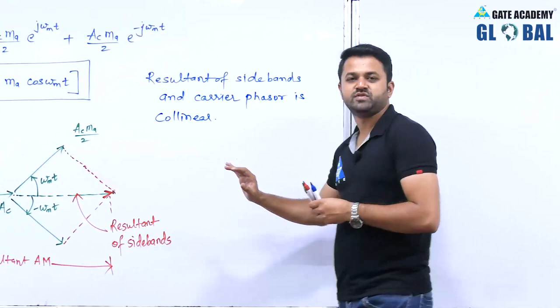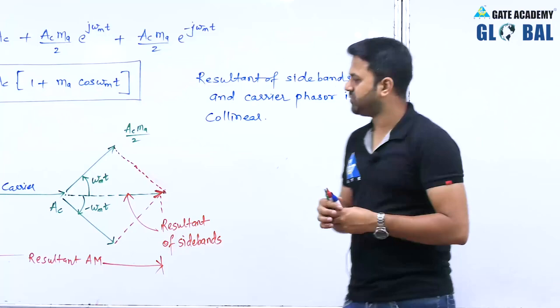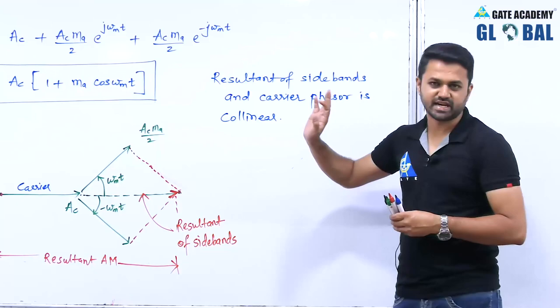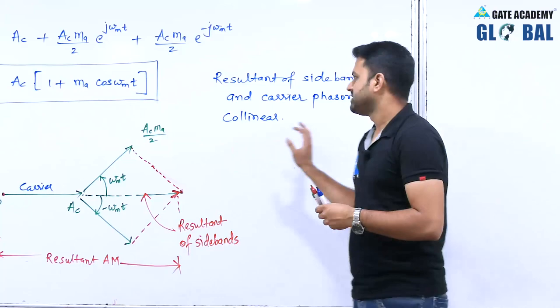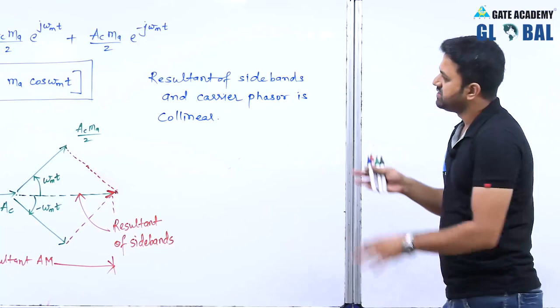When we draw the phasor diagram of angle modulation, we will see how it differs from amplitude modulation. In narrowband FM, which will be covered in the next chapter, we will see how those phasors are related to each other — unlike the collinear relationship seen here in AM.